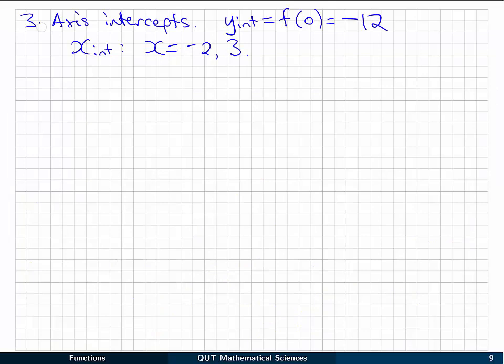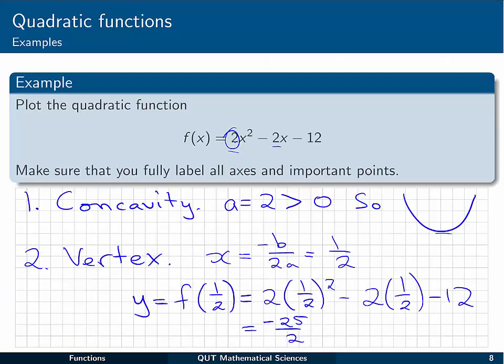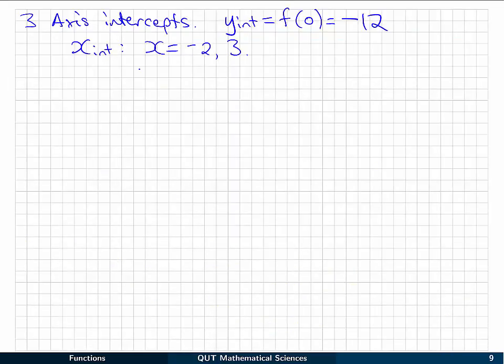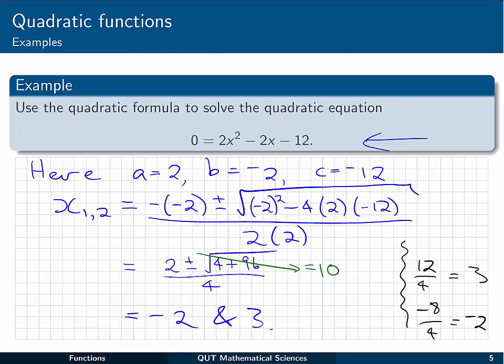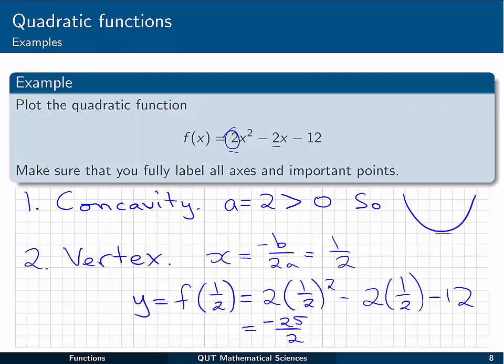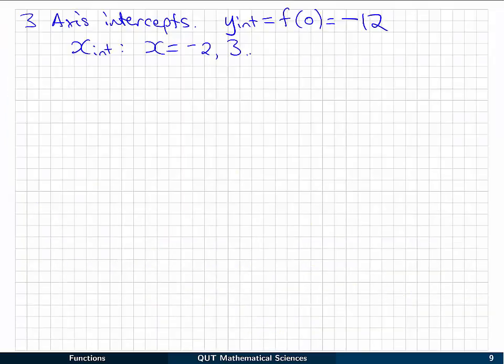And for the axis intercepts, the y intercept is just the constant value from the end of the function, or in other words, f of 0. So that's minus 12. And the x intercepts, conveniently, we've already solved this quadratic a couple of examples back, was exactly this one. So we know that our x intercepts will be at minus 2 and 3. So now we can take all that information, put it together on a set of axes, and we can bring together our sketch of the graph of this function.